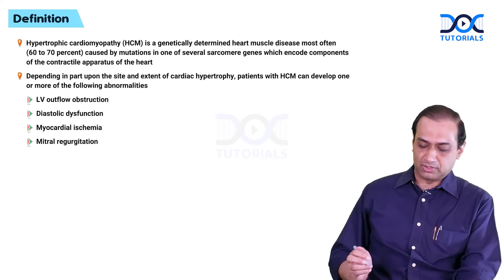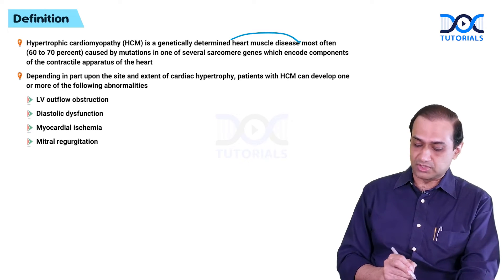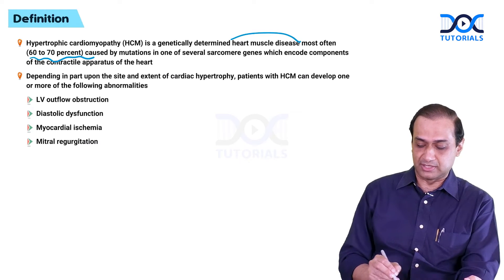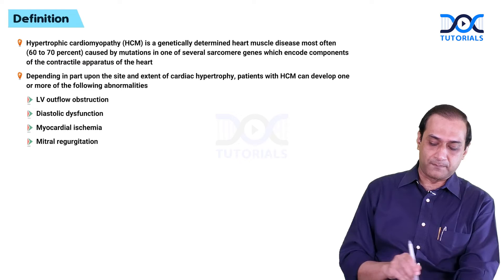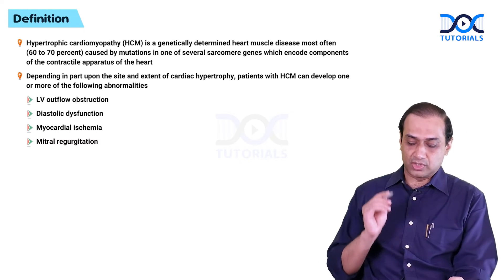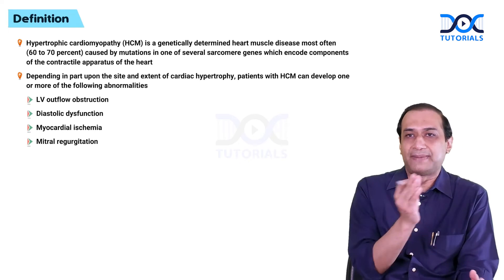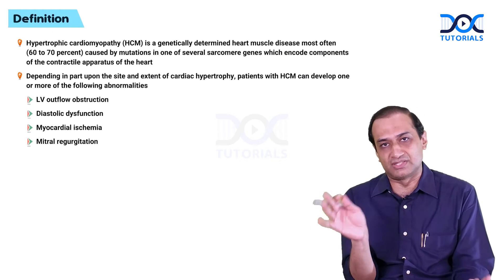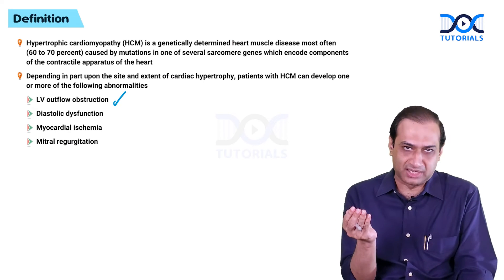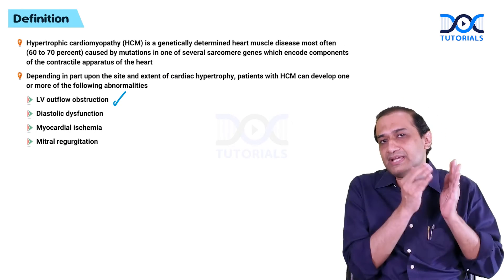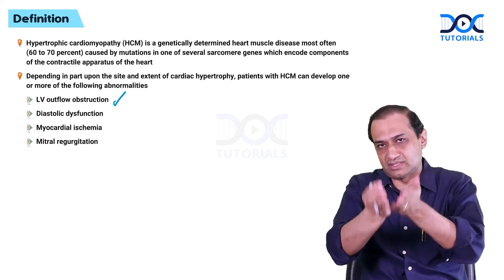By definition, hypertrophic cardiomyopathy is a genetic disorder of the heart muscle, most often caused — in 60 to 70% of cases — by mutations in one of several sarcomere genes that encode for the various components of the contractile apparatus of the heart. There are four important parameters constituting its pathophysiological basis. The first is a variable degree of outflow obstruction, which is dynamic in nature — sometimes minimal but can increase drastically with various maneuvers and activities.